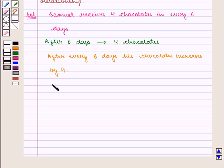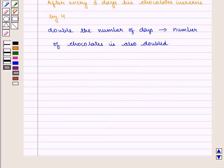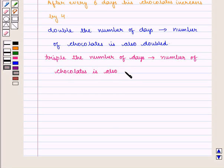So, if we double the number of days, then the number of chocolates is also doubled. If we triple the number of days, then the number of chocolates is also tripled, and so on.